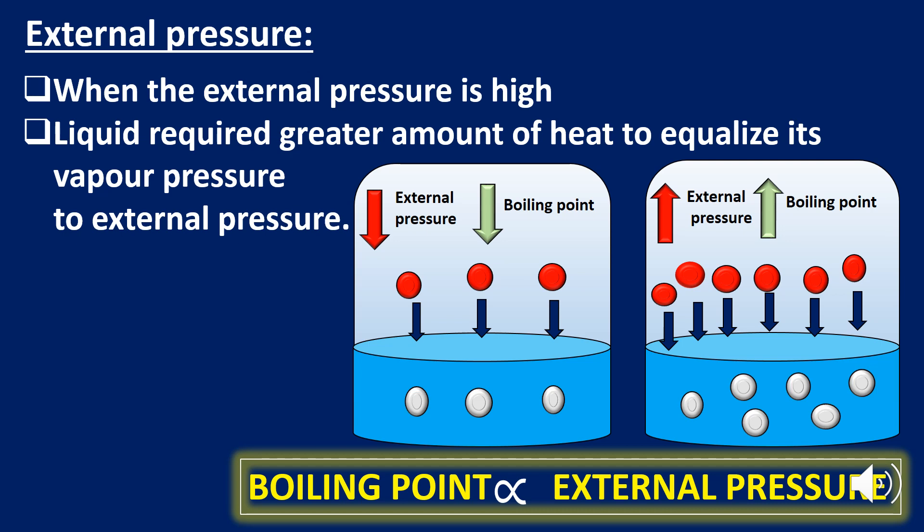When the external pressure is high, the liquid requires more heat to equalize its vapor pressure to the external pressure, and thus boils at a higher temperature. Similarly, when the external pressure is low, the liquid requires less heat to equalize its vapor pressure and boils at a lower temperature.